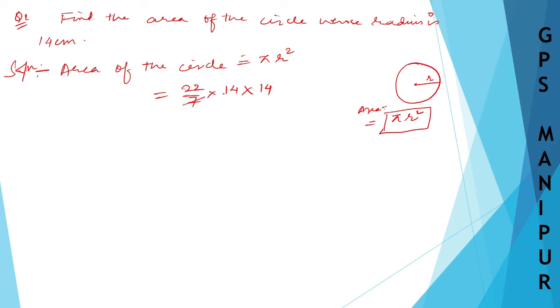Seven in the denominator cancels with 14, leaving 2. So 14 × 2 = 28 × 22. And 28 × 22: 28 × 2 is 56.